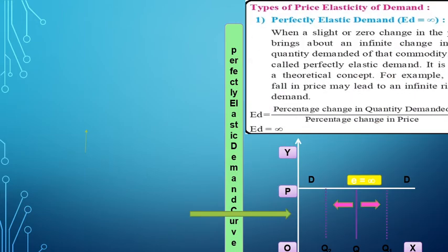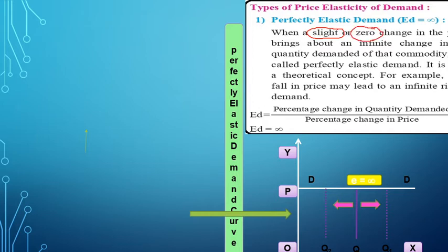The first type of price elasticity of demand is perfectly elastic demand. When a slight change — or zero change, or a change which is not measurable — in the price of the commodity brings an infinite change in the quantity demanded of that commodity, it is called perfectly elastic demand.